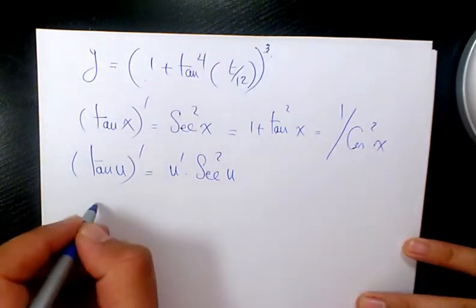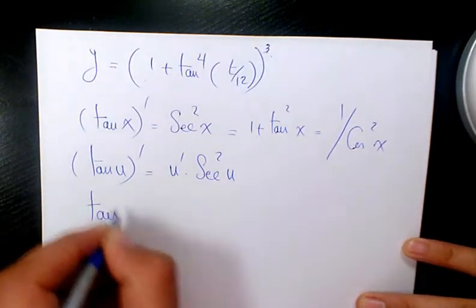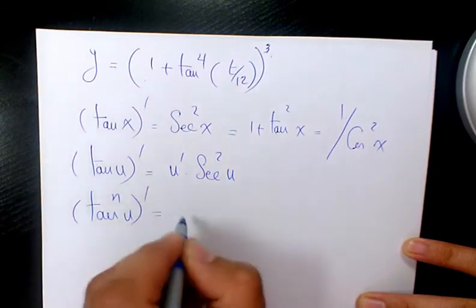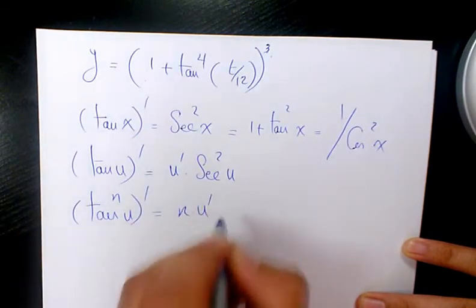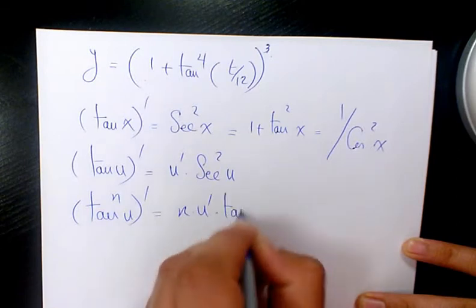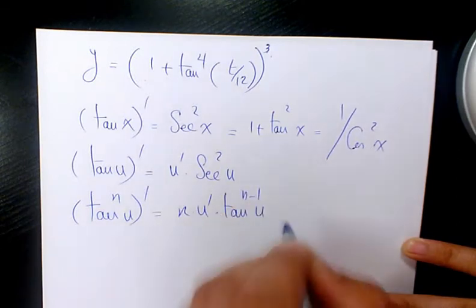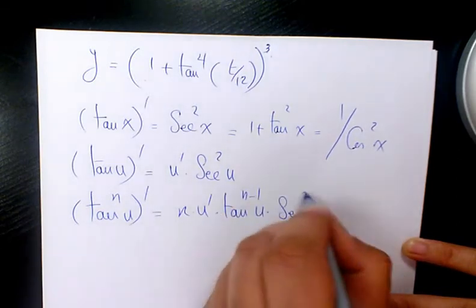If you have tan to the power of n u, the derivative is n times u prime times tan to the power of n minus 1 u times secant squared u.